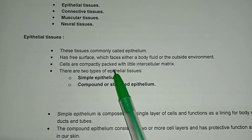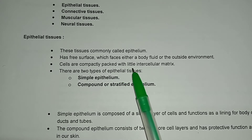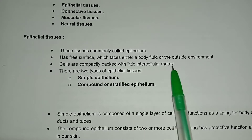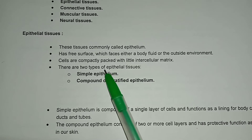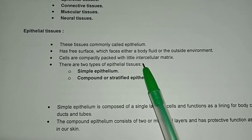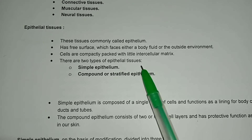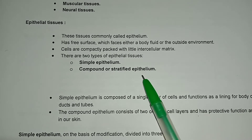Cells are compactly packed and there is little intercellular matrix. There are two types of epithelial tissues: simple epithelium and compound epithelium.